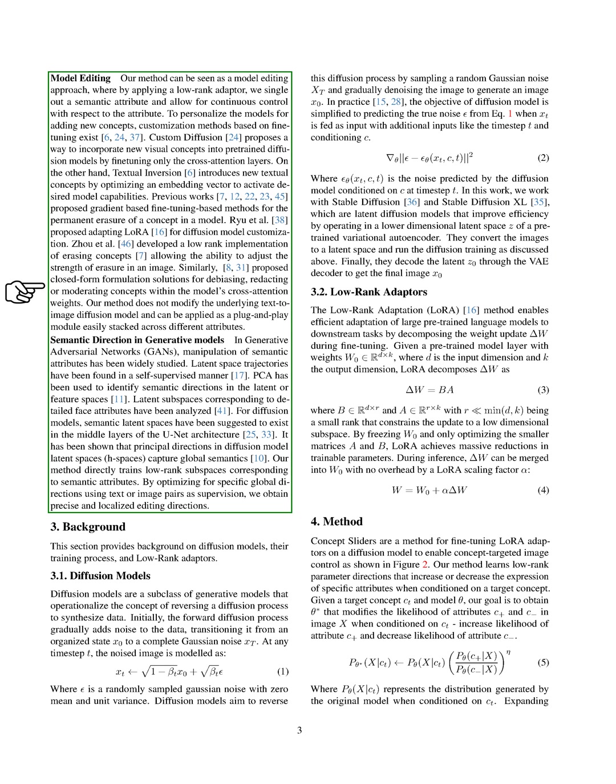In generative adversarial networks (GANs), manipulation of semantic attributes has been widely studied. Latent space trajectories have been found in a self-supervised manner, and PCA has been used to identify semantic directions in latent or feature spaces. Latent subspaces corresponding to detailed face attributes have also been analyzed. For diffusion models, semantic latent spaces have been suggested to exist in the middle layers of the UNet architecture, and principal directions in diffusion model latent spaces have been shown to capture global semantics. Our method directly trains low-rank subspaces corresponding to semantic attributes, obtaining precise and localized editing directions by optimizing for specific global directions using text or image pairs as supervision.